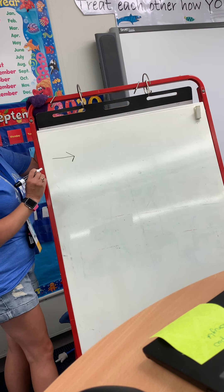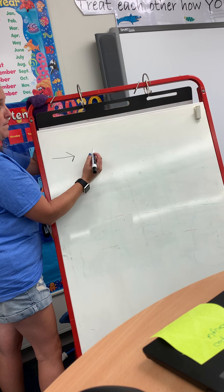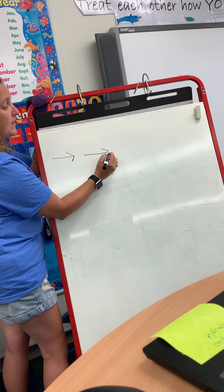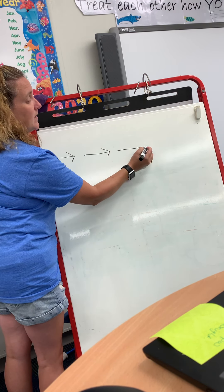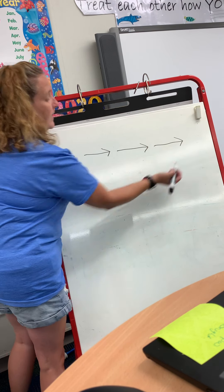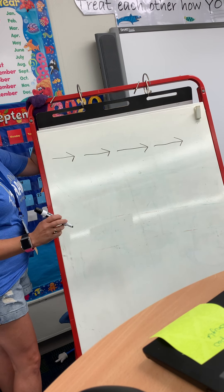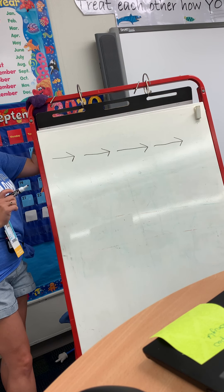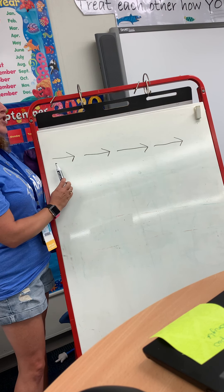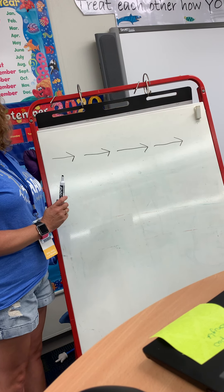All of our arrows are going to go to the right — start at the left and go to the right. So we're going to practice making slide arrows: go to the right, diagonal, diagonal; right, diagonal, diagonal; right, diagonal, diagonal. Can you make your slide arrows? If they don't quite have it yet, you can pause the video and show them again how to make the slide arrows, because this is very important to the next step.